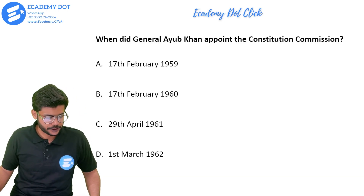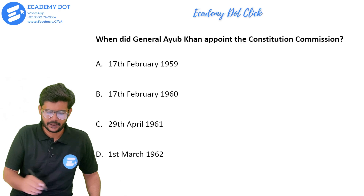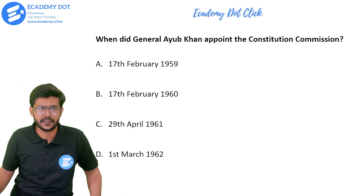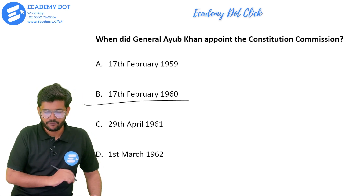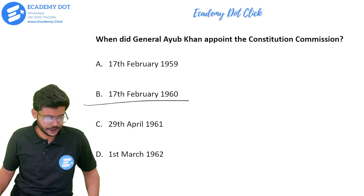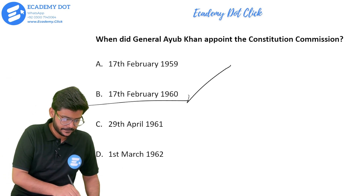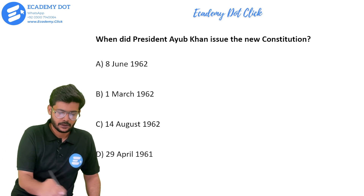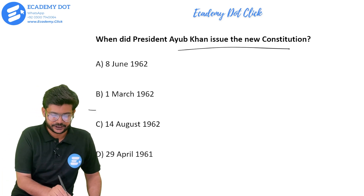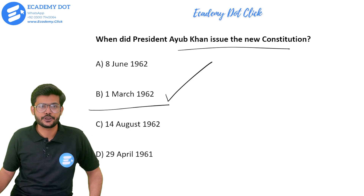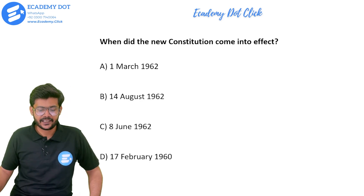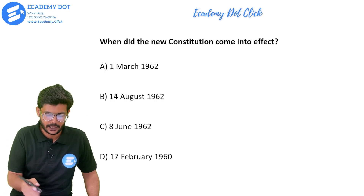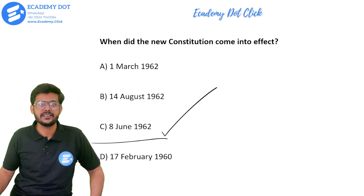Coming to the MCQs portion. When did General Ayub Khan appoint the Constitution Commission? On 17 February 1960 — that is the right answer. When did President Ayub Khan issue the new constitution? The issue date of the constitution was 1 March 1962. When did the new constitution come into effect? The second constitution of Pakistan was enforced on 8 June 1962.